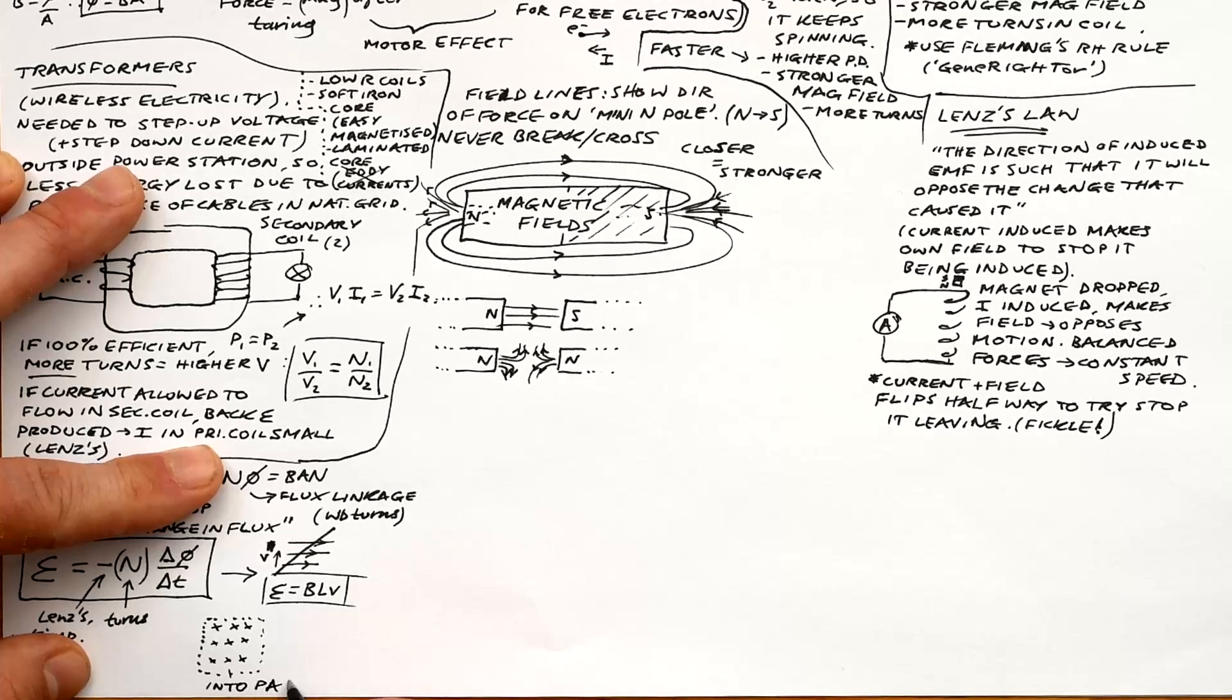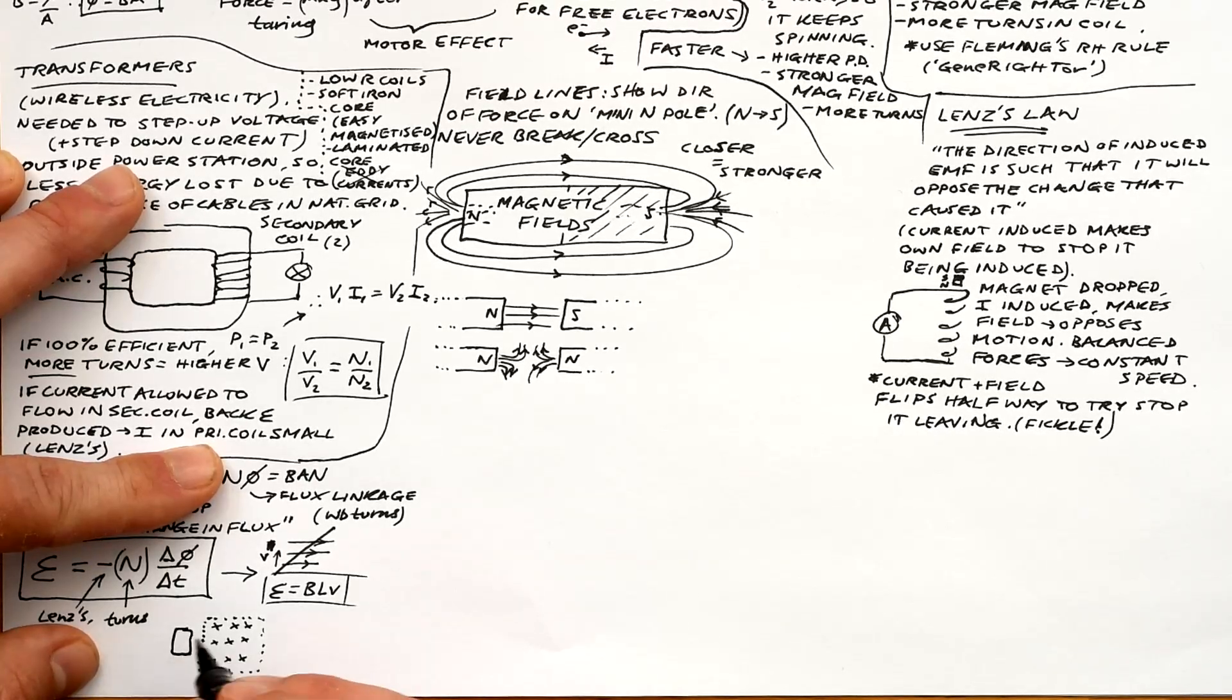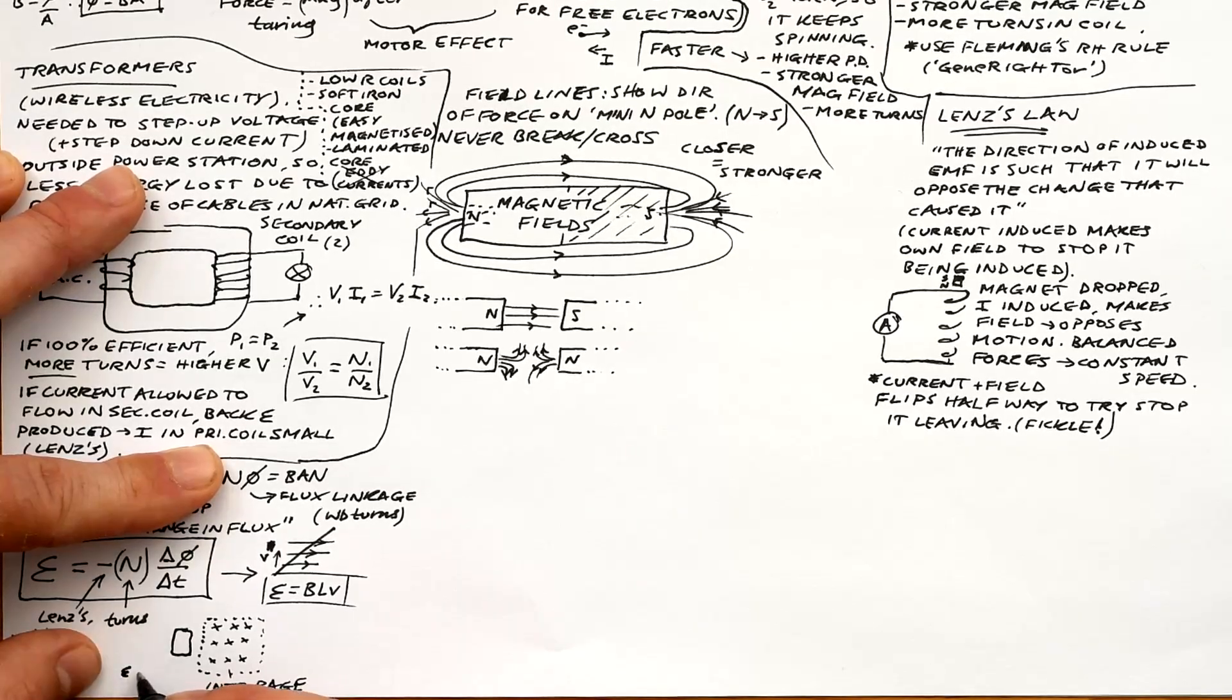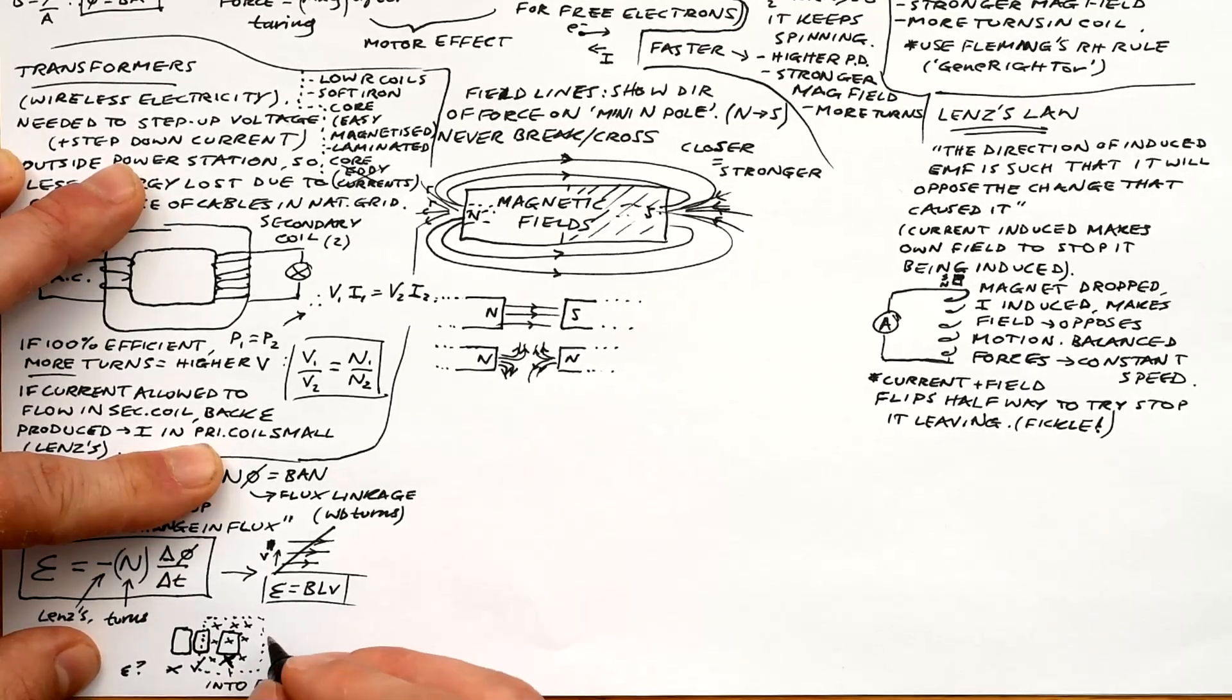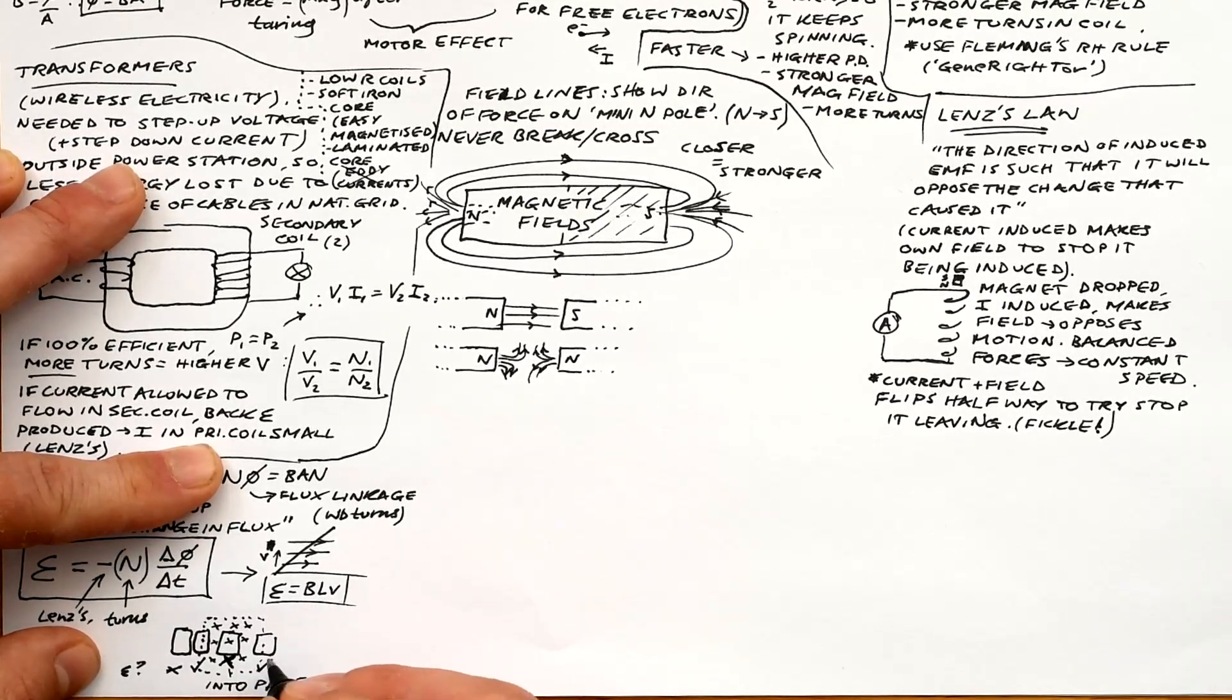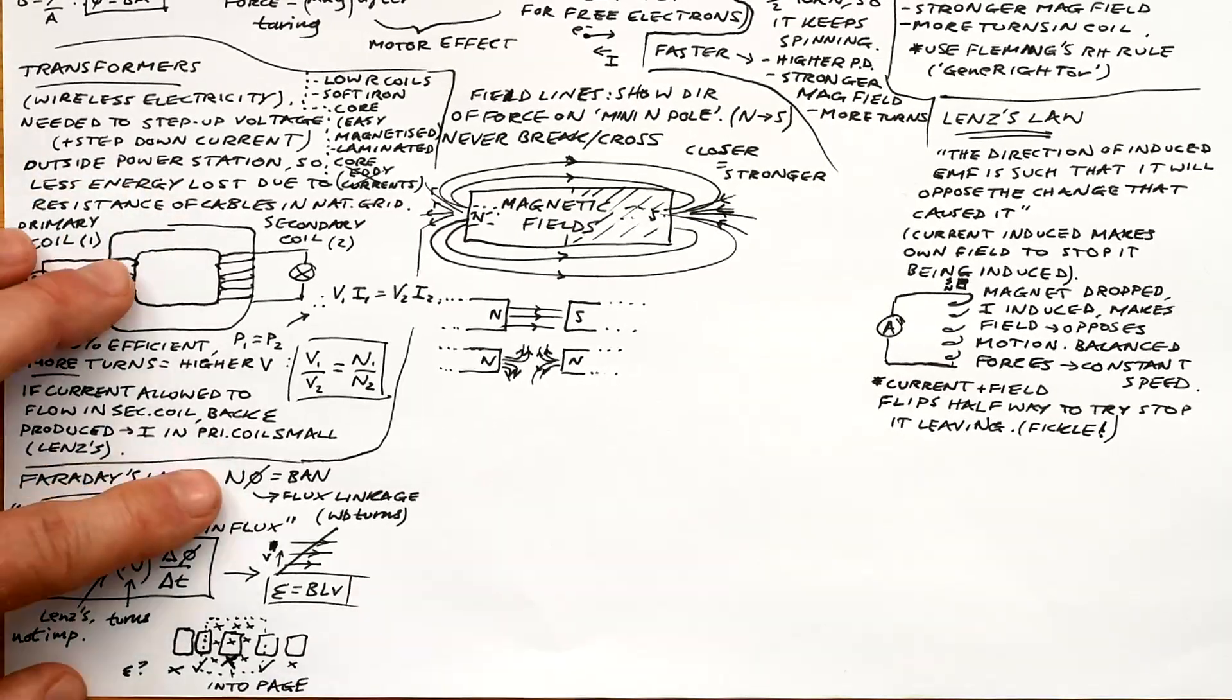BLV can also be applied to a rectangular coil that is entering and exiting a magnetic field. Here's a field that I've drawn to show that the field lines are going into the page. One side of the coil is going in, so we can use BLV for that. If it's going at a constant speed, then we have a constant EMF as it's entering. Once it's all the way in, we don't have any EMF. When it's exiting, we have a constant EMF again, but it's going to be negative if it was positive when entering.